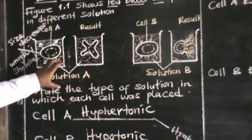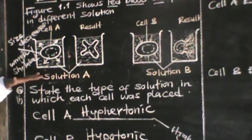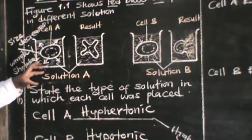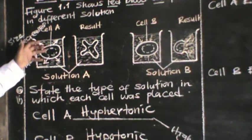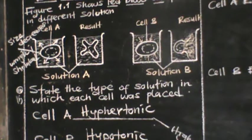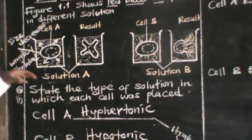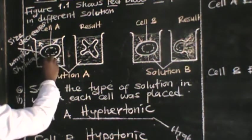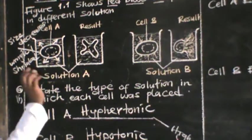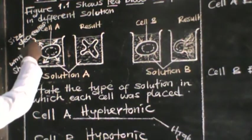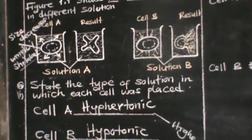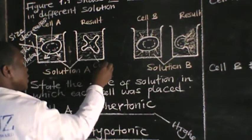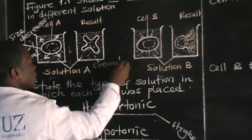The red blood cell loses water by osmosis, causing the cell to wrinkle or shrink. This condition is called crenation. Crenation is a condition where an animal cell loses water by osmosis, causing it to wrinkle or shrink. So this is what we call crenation.